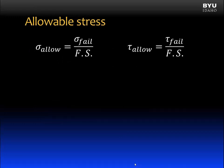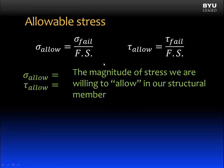So we want to define a term called allowable stress. We have a term for allowable normal stress and a similar term for allowable shear stress. Allowable stress is equal to the failure stress divided by some factor of safety. We call sigma allowable or tau allowable the magnitude of stress we are willing to allow in our structural member — this is the maximum we want to reach. We don't want to go above this allowable stress level.